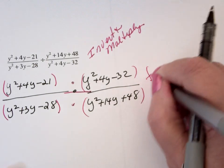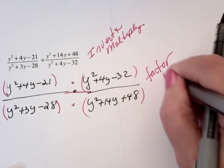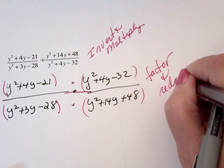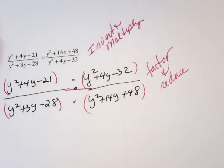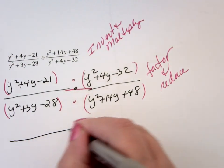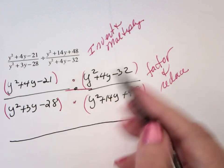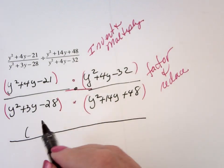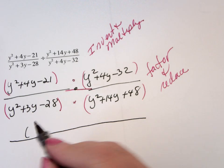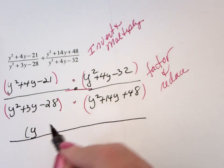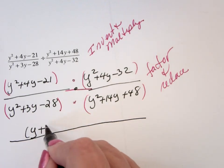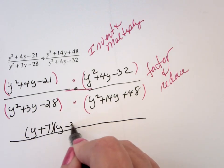Now we will factor and reduce, or simplify, that's going to be the same name for it. So here we go, factor. I'm going to end up with, for the first one, y squared plus 4y minus 21 is going to be a y plus 7y minus 3.